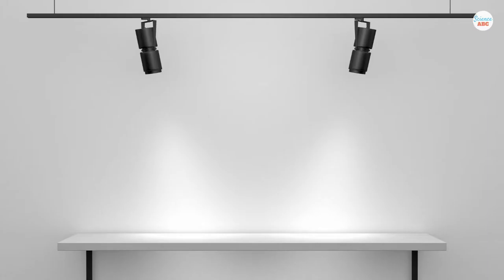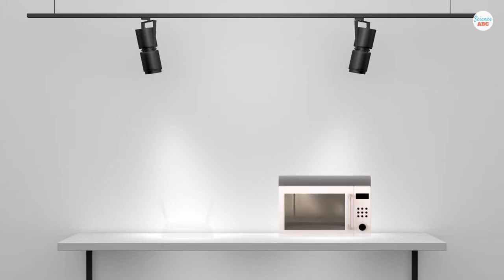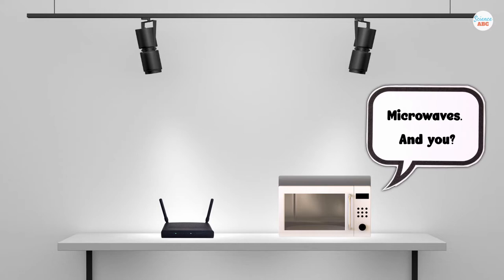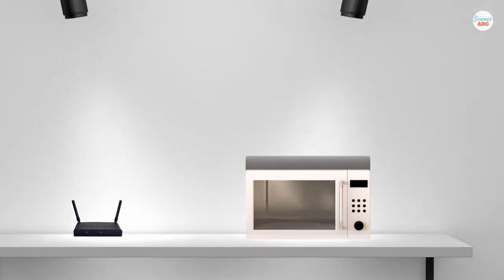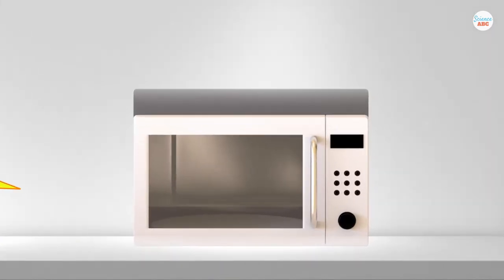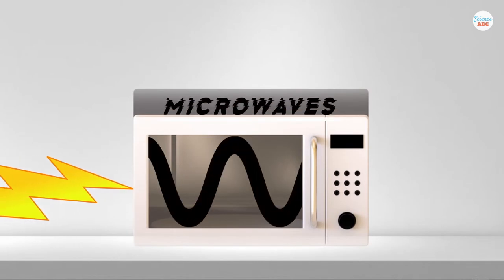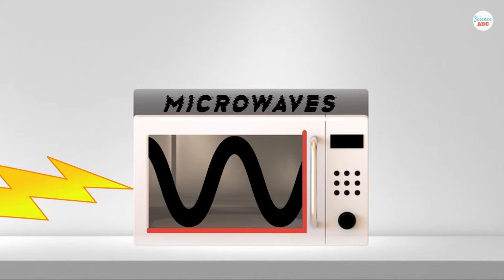Two of the most common household appliances are microwave ovens and Wi-Fi routers, both of which emit electromagnetic radiation. Microwave ovens emit microwaves to heat food, while Wi-Fi routers emit radio waves. Microwave ovens convert electricity into longer wavelength electromagnetic waves, called microwaves, which are emitted inside a tightly sealed metal box.